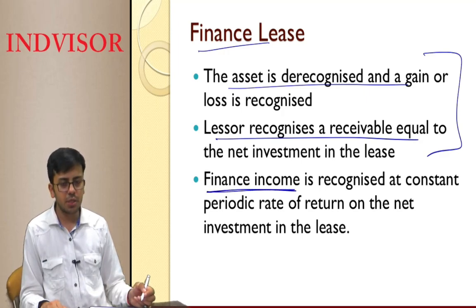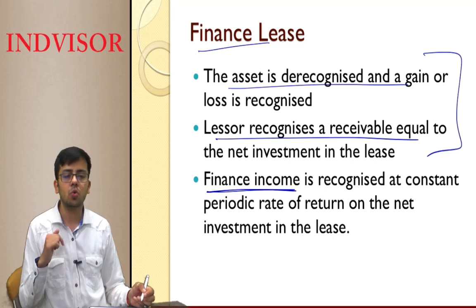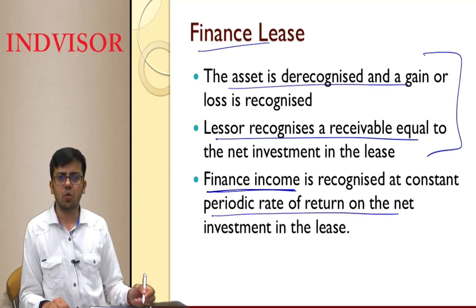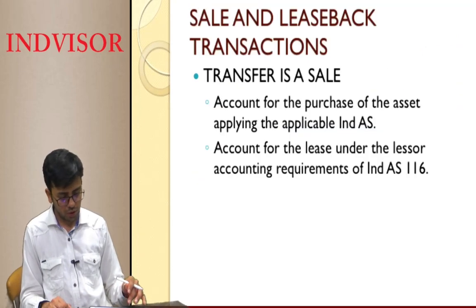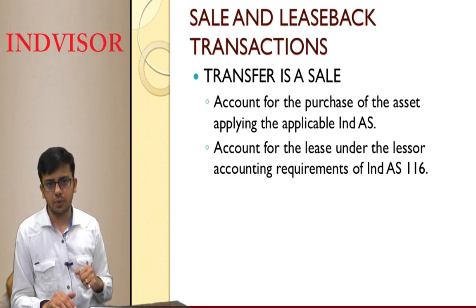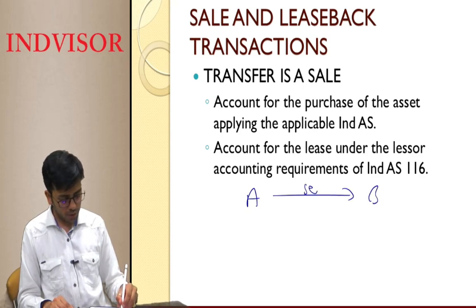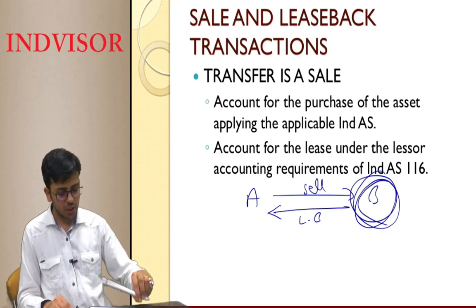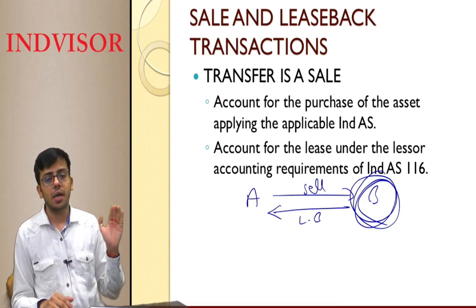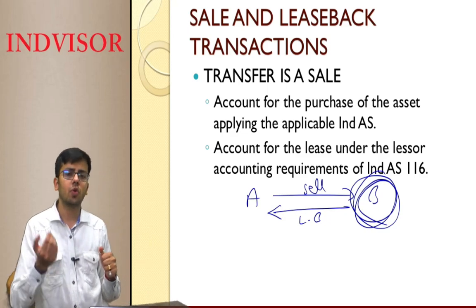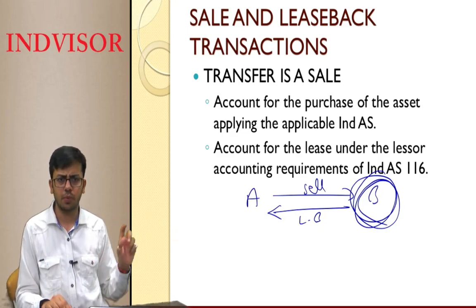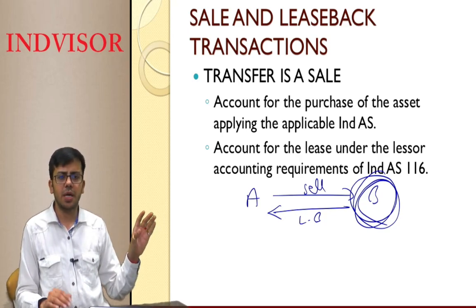For finance lease, the difference between the asset's carrying amount and the lease receivable recognized is transferred to P&L. Subsequently, finance income is recognized at the rate at which the lease rent receivable was discounted, and is recognized as income at a constant rate over the period. Practical questions are recommended for better understanding. For a sale and leaseback transaction that qualifies as a sale — where A sells to B and leases back — B (the lessor) will recognize the asset in its books.